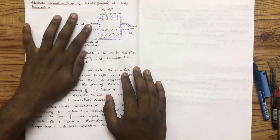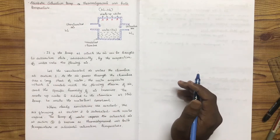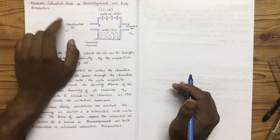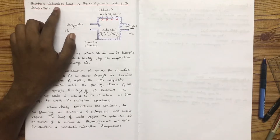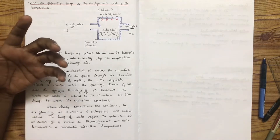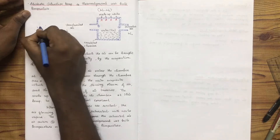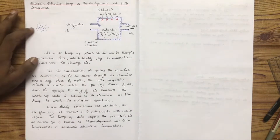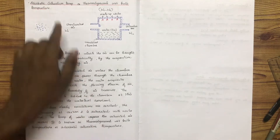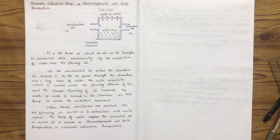This is the adiabatic saturation temperature and thermodynamic wet bulb temperature. If you use the saturation temperature, the air will be saturated. The saturation temperature is saturated — it contains the maximum amount of moisture possible. This is the thermodynamic wet bulb temperature.